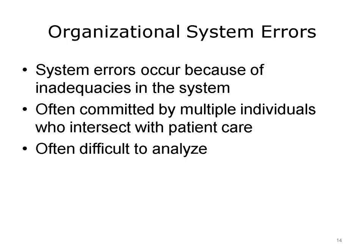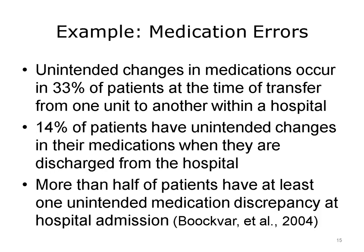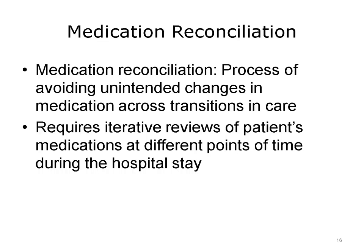In contrast to individual errors, organizational system and process errors occur because of inadequacies within the organization that delivers health care. They are often committed by multiple individuals who intersect while providing patient care within the same setting. Medication errors are one example of organizational system and process errors. It has been estimated that unintended changes in medications occur in about one-third of all patients at the time of transfer from one unit of a hospital to another, about 14% of patients have unintended medication changes at discharge, and more than half of all patients have at least one unintended medication discrepancy at hospital admission.